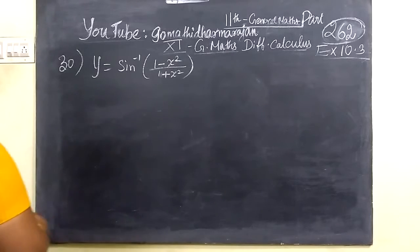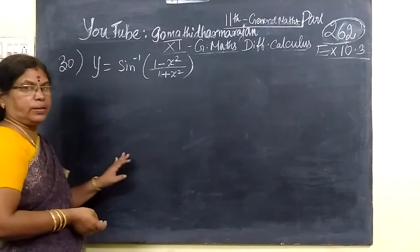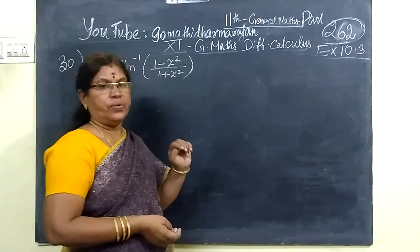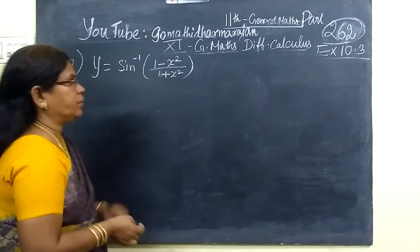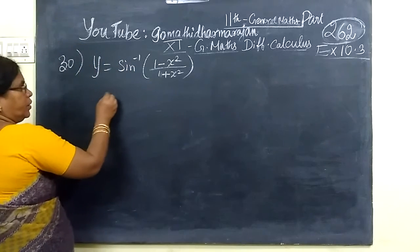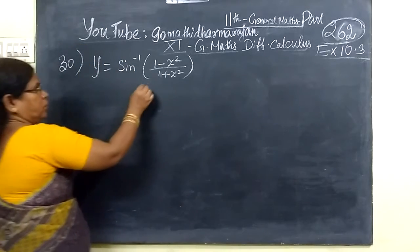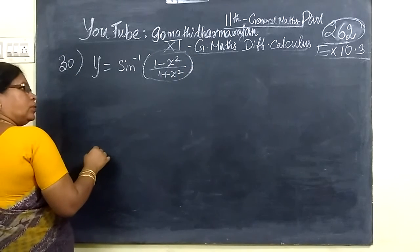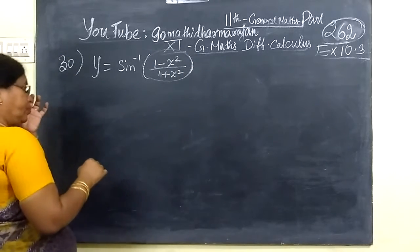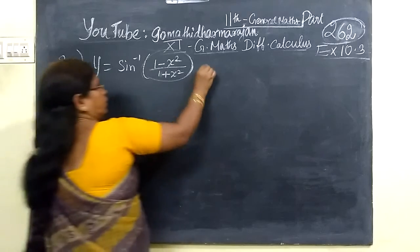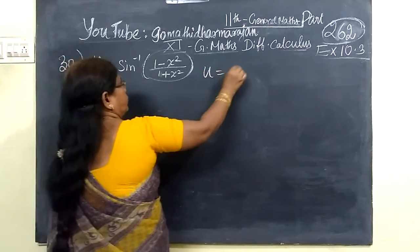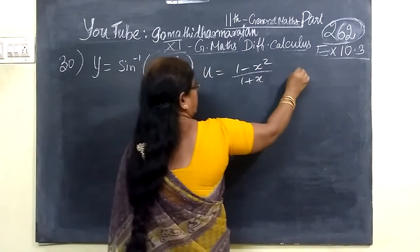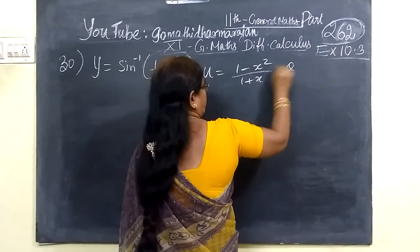Coming to the next question — I think this is the last question in this exercise. Now, this is how we can do it. So we are writing u equal to 1 minus x squared by 1 plus x squared.